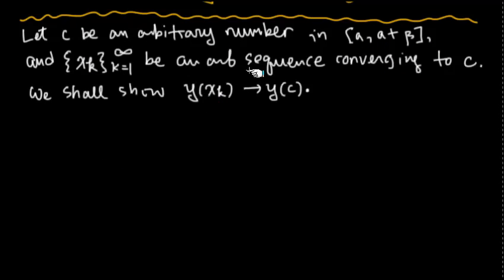The statement shown here is called sequential continuity. The space, the real numbers we're looking at, is equivalent, and it is a lot more convenient than epsilon-delta. So this is a perfectly rigorous way of dealing with continuity.